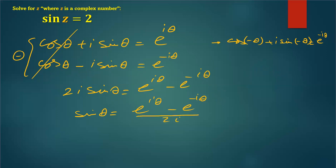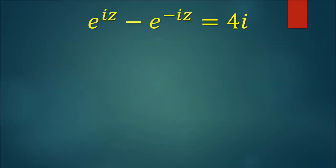Okay, I need to solve that. This equation sin θ = 2. So it's e^(iz) minus e^(-iz) over 2i equals 2. When we cross multiply, 2i times 2 is 4i. So this is the first part of the solution, just to derive this formula to solve this one.